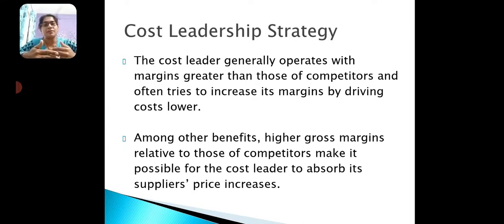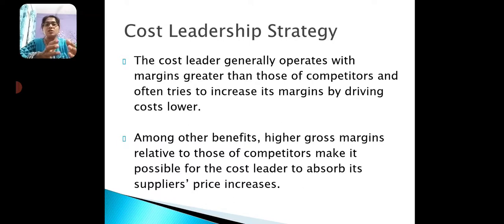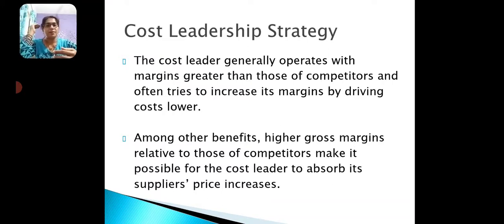Best examples of cost leadership are Walmart and Amazon. This strategy is also followed by most FMCG companies like Hindustan Lever, Patanjali, or Procter and Gamble. Online portals like Flipkart and Amazon maintain cost leadership by keeping costs minimum, providing discounts, earning higher profit margins, and selling goods at lower prices compared to competitors.